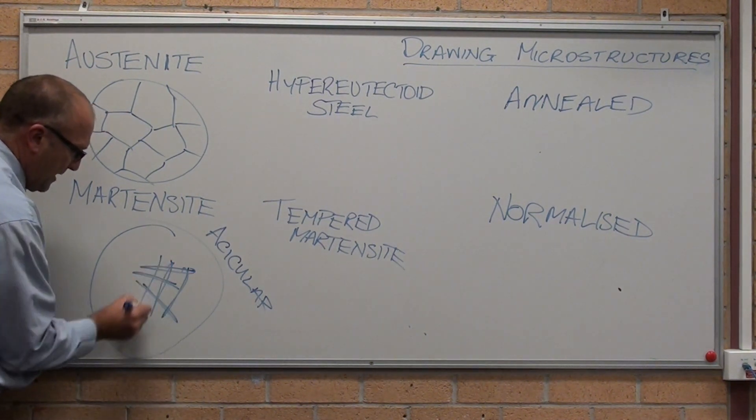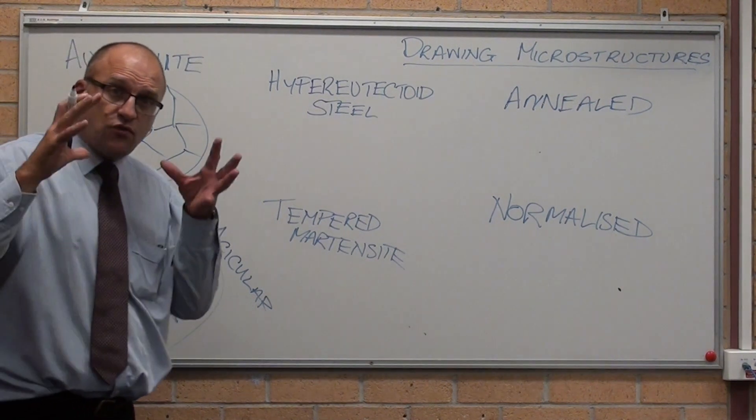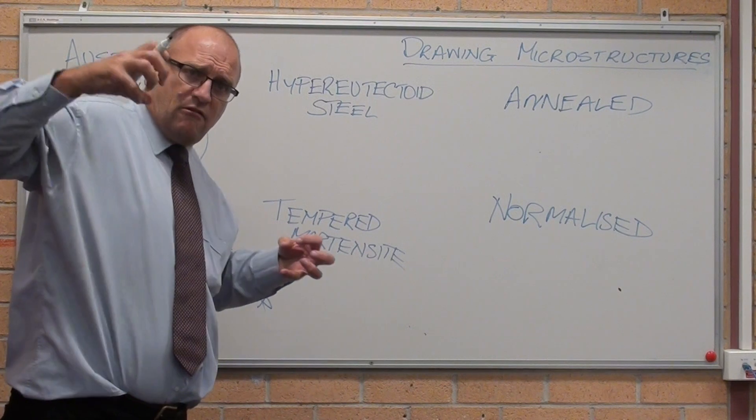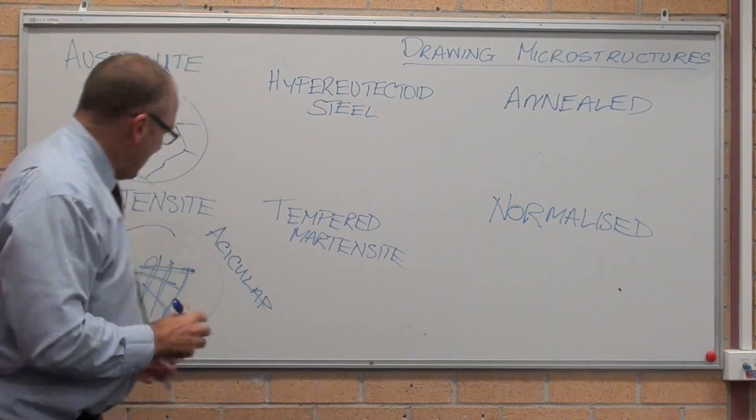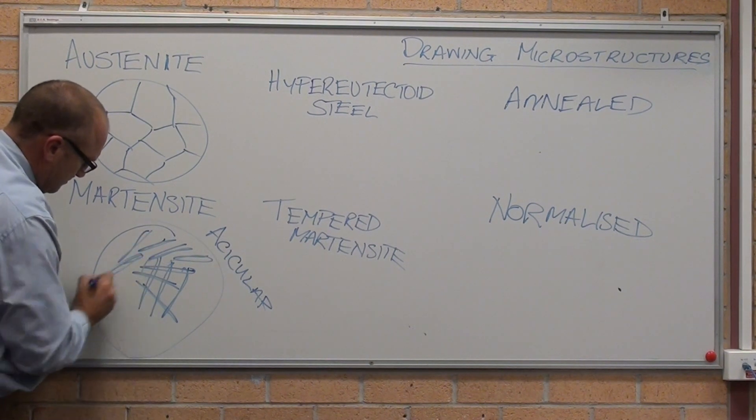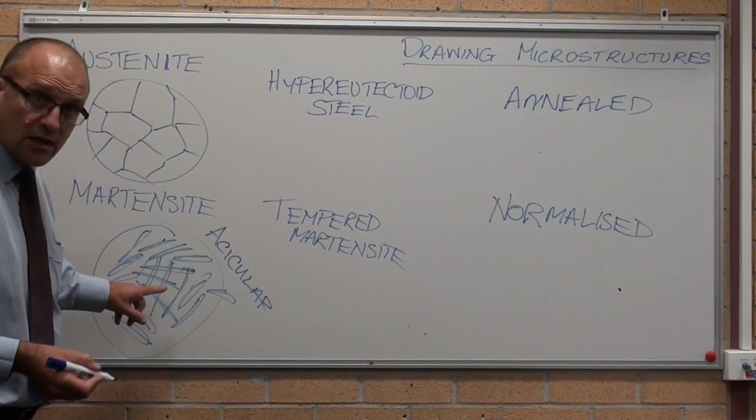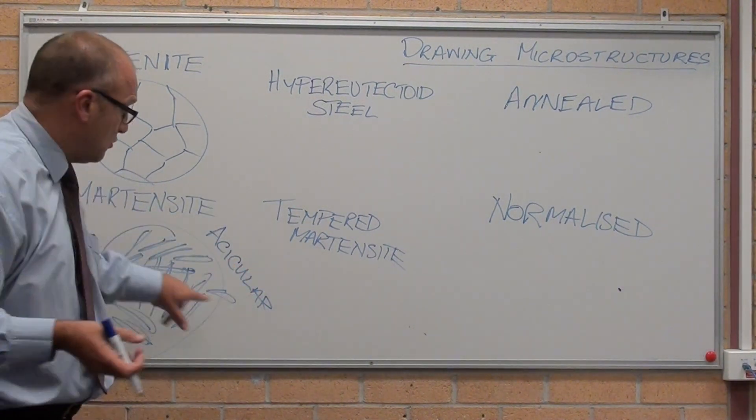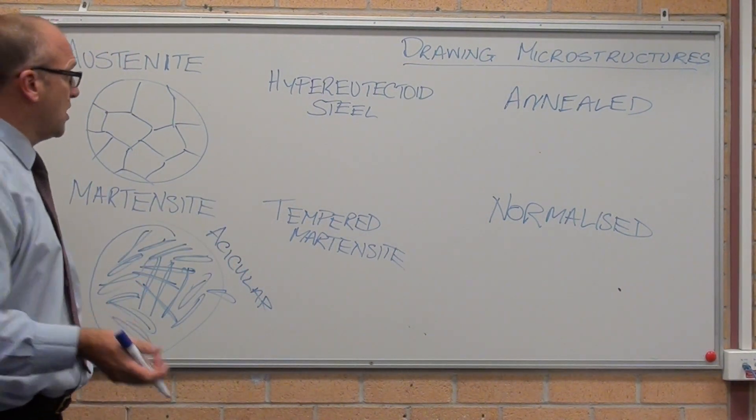The structure of martensite, when it goes from being a cubic structure to being extended, it basically grows along planes. Martensite looks like needles under the microscope. Just get a stack of needles, drop them on a plate, and draw that. That's what it looks like.